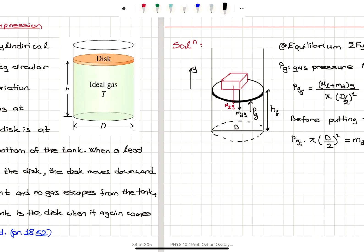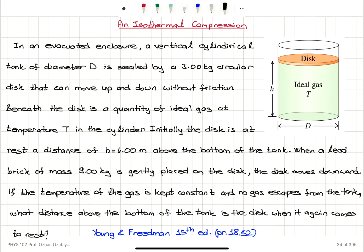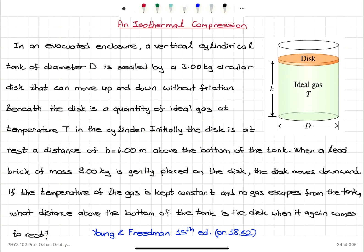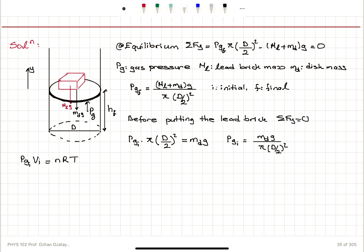Now, this is containing an ideal gas, so the equation of state is the ideal gas law. I can write: initial pressure of the gas times initial volume equals number of moles N times R times T. The problem states constant temperature and constant number of moles, because no gas escapes from the tank. So this equals final pressure times final volume, because N and T are constants.